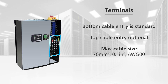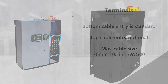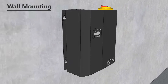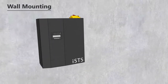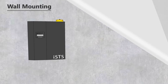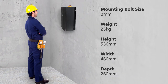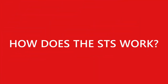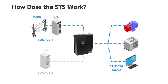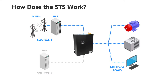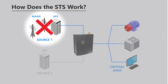Bottom cable entry is standard, with top cable entry available as an option. Terminals suit bolted lug connections using cables up to 70 millimetres squared. The Model W mounts conveniently to the wall using eight-millimetre bolts. The STS connects one of two AC power sources to the critical load and provides secure power redundancy.